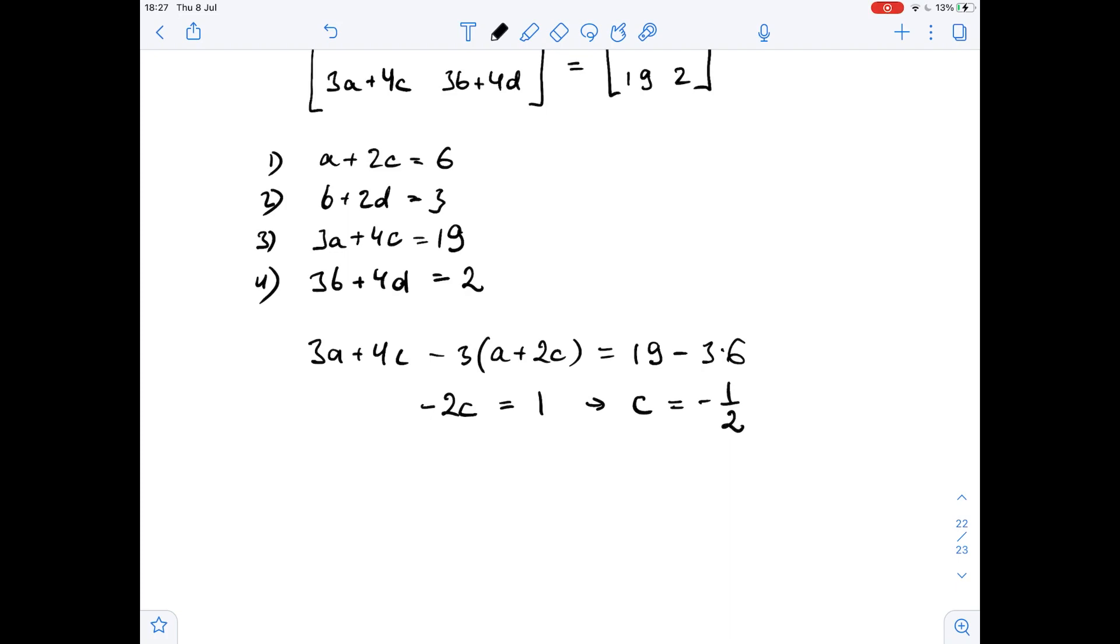Now we can substitute negative 1 over 2 for c in our first equation. So a plus 2c equals 6, then a plus 2 times negative 1 over 2 equals 6, then a minus 1 equals 6, so a equals 7.